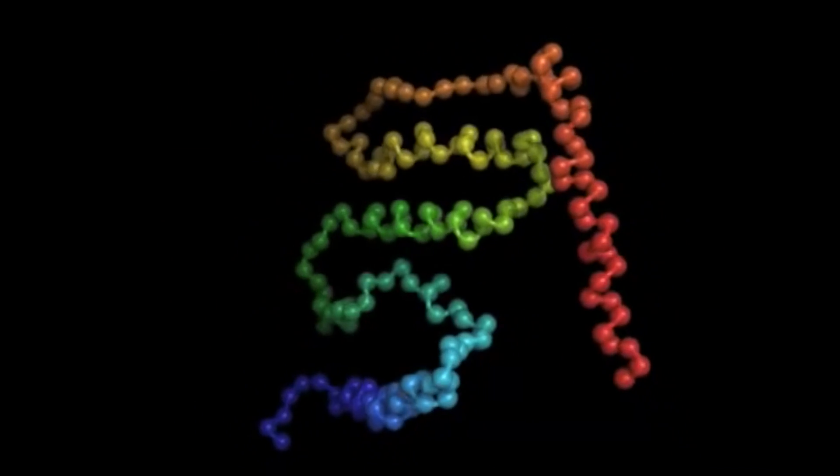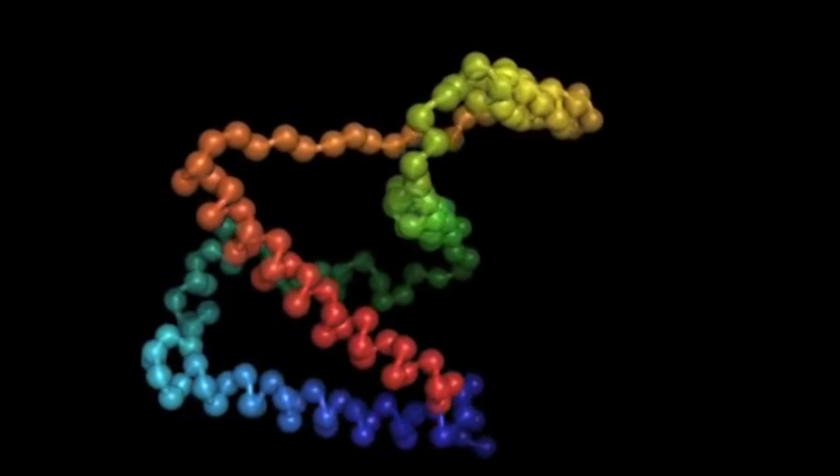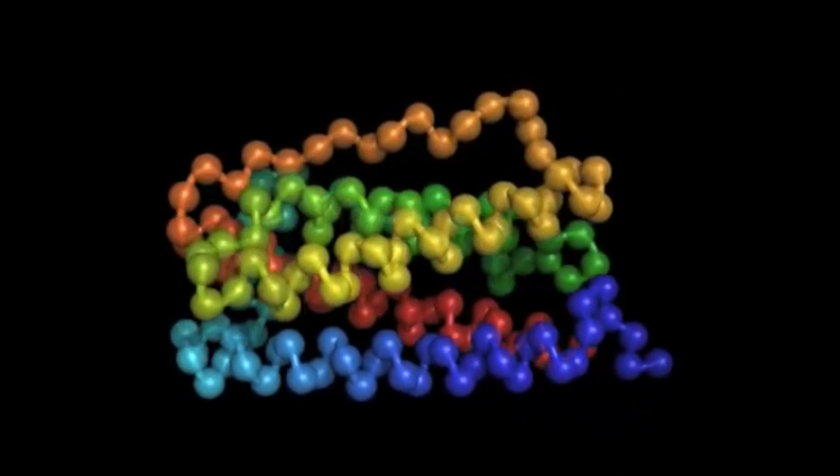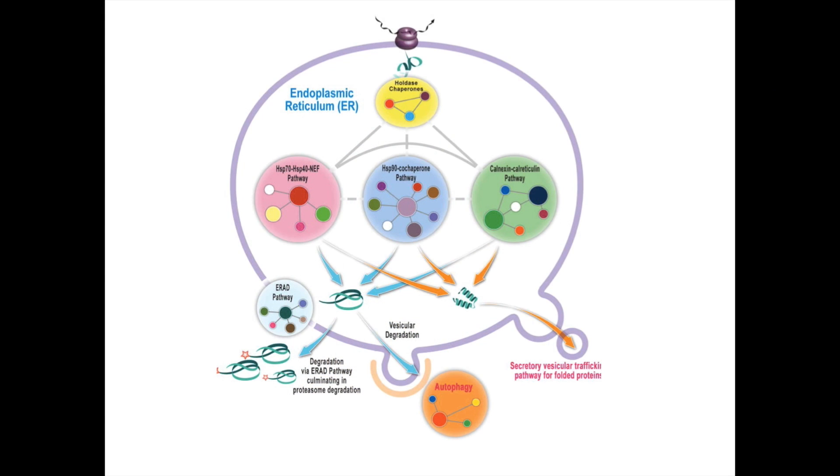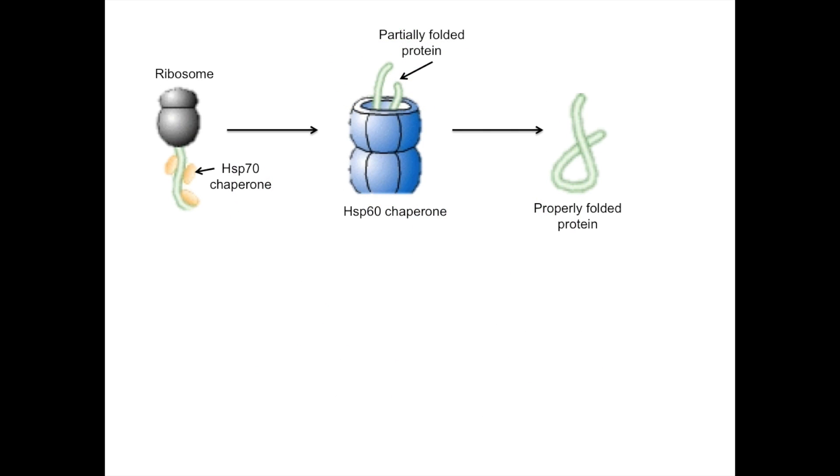However, if the protein is unable to achieve its proper conformation on its own, it may require assistance from protein quality control mechanisms. As a result, cells have evolved numerous mechanisms to ensure protein quality control, known as the proteostasis network. These include the use of molecular chaperones which assist in protein folding.